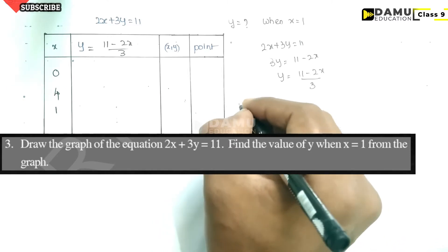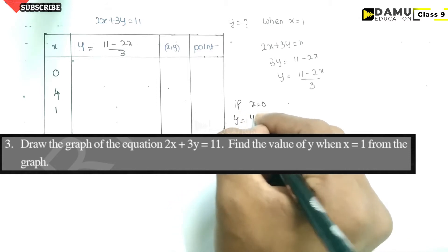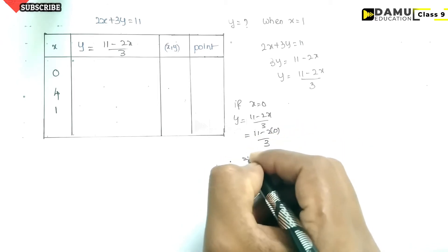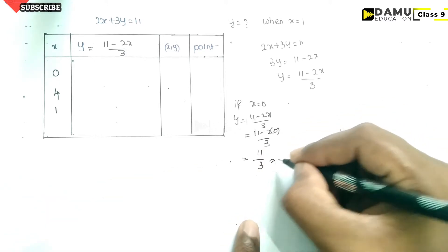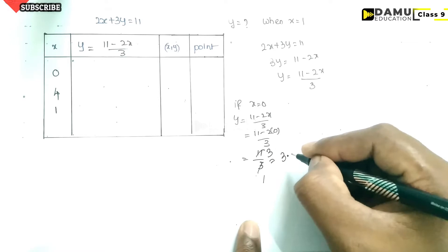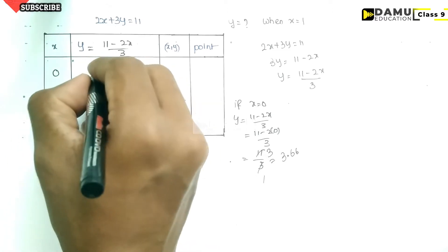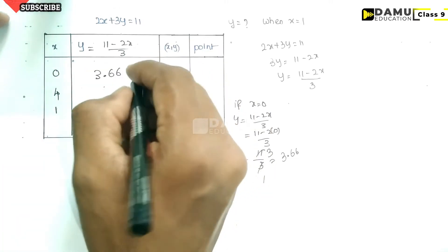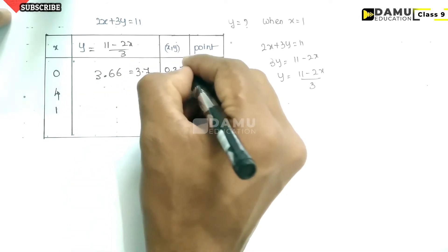When x equals 0, what is the y value? y equals (11 minus 2 times 0) divided by 3, which gives 11 divided by 3. That is approximately 3.66, so let us take around 3.7. So the point is (0, 3.7).